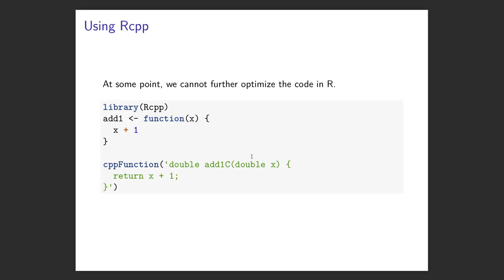At this point we've probably exhausted the optimization we can do in R itself. Once you get there, if you still want additional speed, that's when you might want to start thinking about calling something in C or C++ rather than just R code. Fortunately it's pretty easy to call C++ code from R. The Rcpp package makes it really easy. Here we'll look at how to incorporate C++ code to make this really, really fast. I'll load the Rcpp library and show a very basic example. Rcpp actually allows me to compile a function from the R command line.